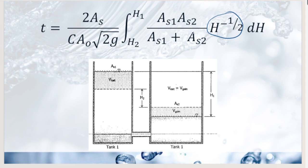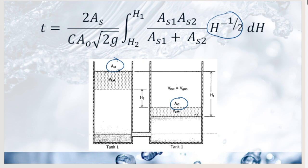The flow over a weir may either be free or submerged — similar to orifices. When free flowing, the downstream side is undisturbed. When submerged, both sides are under water. Weirs may also be classified by form: sharp-crested or broad-crested, depending on their application.